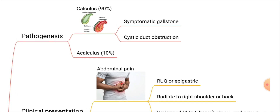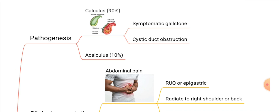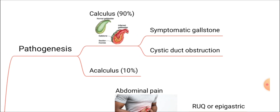Acute cholecystitis can occur with gallstones or without. It is 90% calculous, meaning it occurs with gallstones, and 10% it can be acalculous — acute cholecystitis can occur without gallstones as well. In gallstone cholecystitis, which is calculous, gallstones get obstructed in the cystic duct, mucus fills the gallbladder, becomes infected, and inflammation occurs — that's how cholecystitis develops.